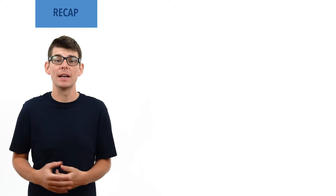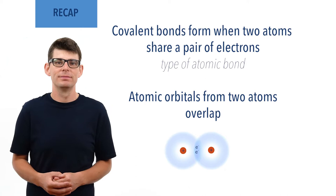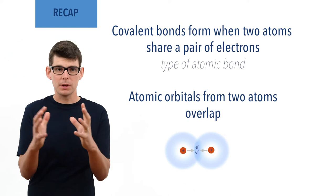Before we talk in detail about induced dipole-dipole forces, there are a few essential ideas you need to be comfortable with. A covalent bond is formed when two atoms share a pair of electrons — it is an example of an atomic bond. Half-filled atomic orbitals from two different atoms overlap, creating a bonding orbital that a pair of electrons can exist in. Electrons are negatively charged and the positively charged nuclei of both atoms are attracted to the increased electron density in the new bonding orbital, pulling them closer together and forming a bond.